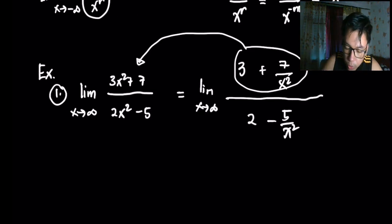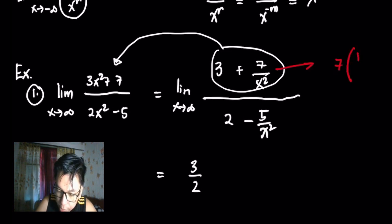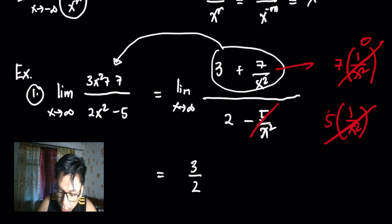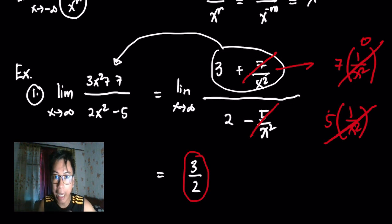We can see that 7/x² is 7 times 1/x^r, which goes to 0 by the theorem, and 5/x² similarly goes to 0. So we're left with 3/2. The limit of the constant 3/2 as x approaches infinity is just 3/2, so the answer is 3/2.